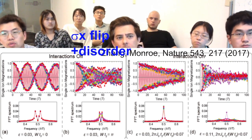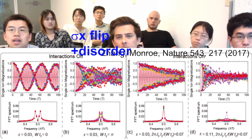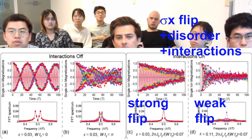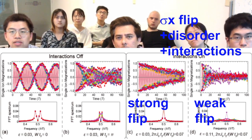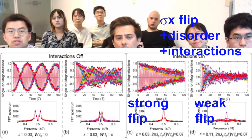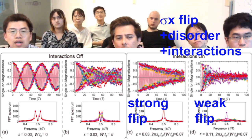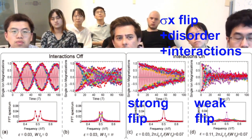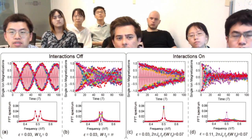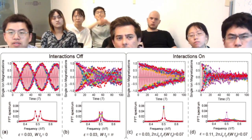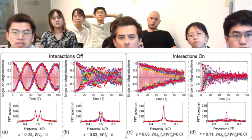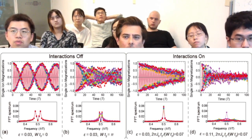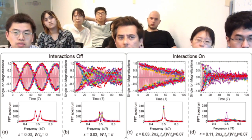On the second one, you have disorder. And then on the right side, you will turn on the interactions. You can see, maybe not easily from this time graph, but from the Fourier transform graph, you can see that this 0.5 frequency is distinct only when the interaction is on.